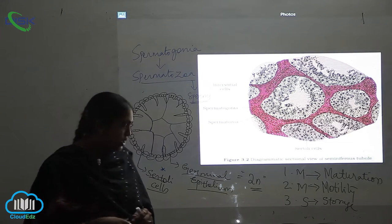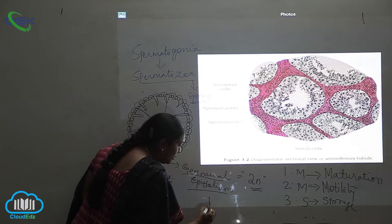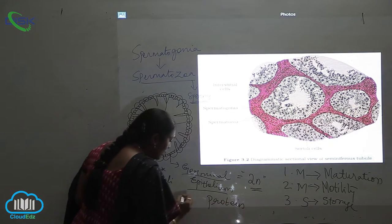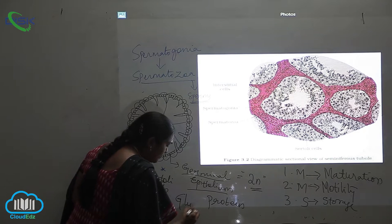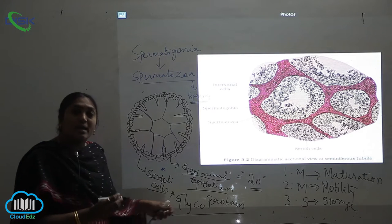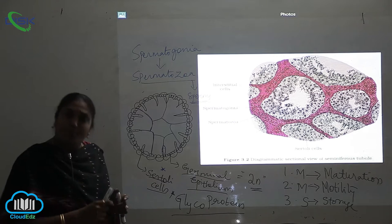From where are they getting this energy? The energy is from a protein called glycoprotein. This glycoprotein provides the energy for further movement of the sperms, which we call motility.